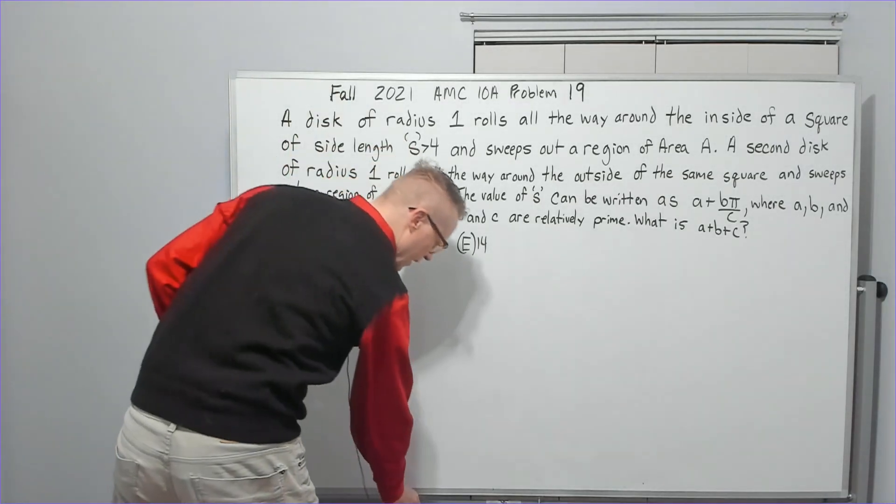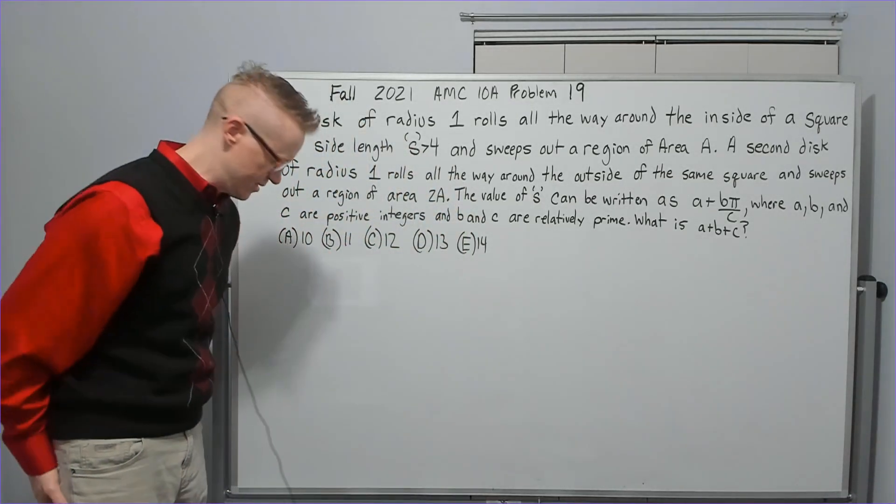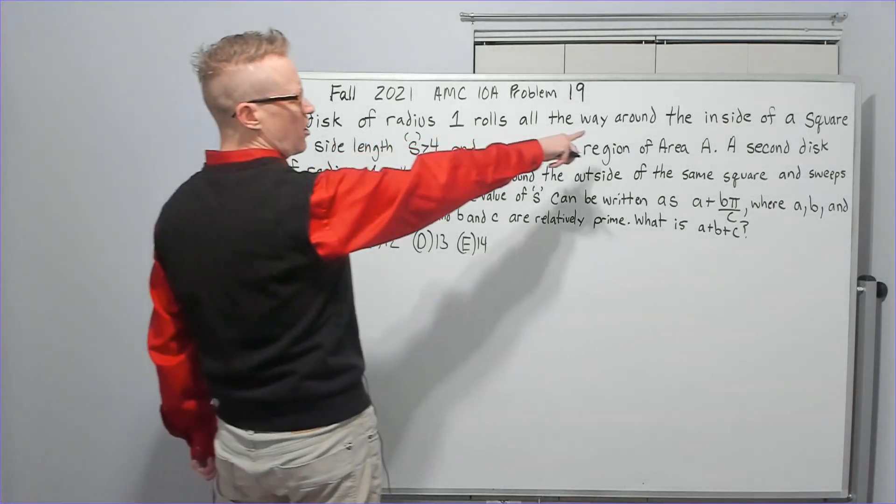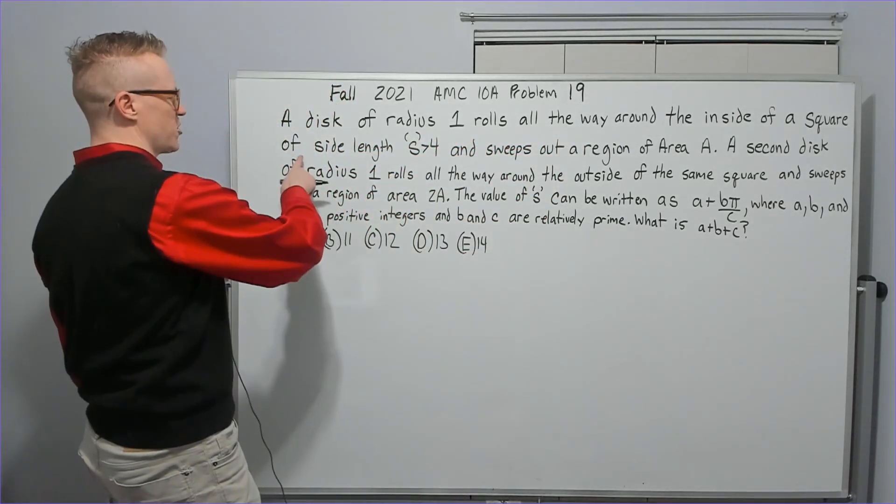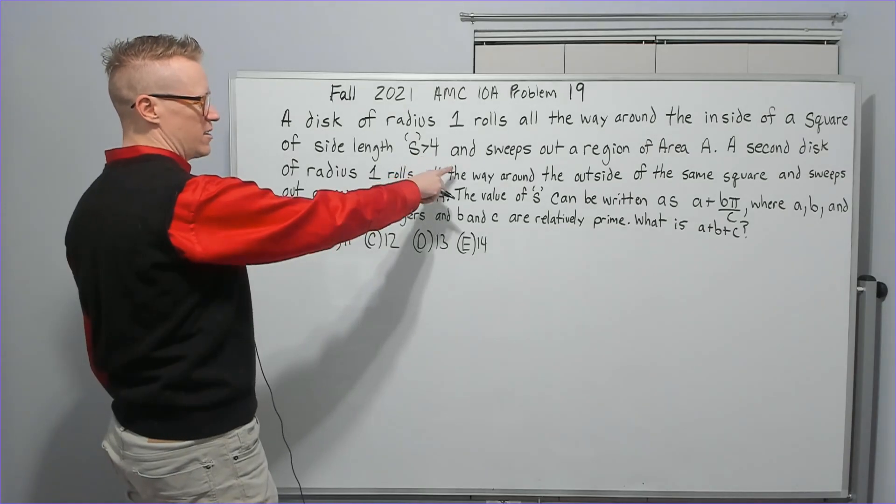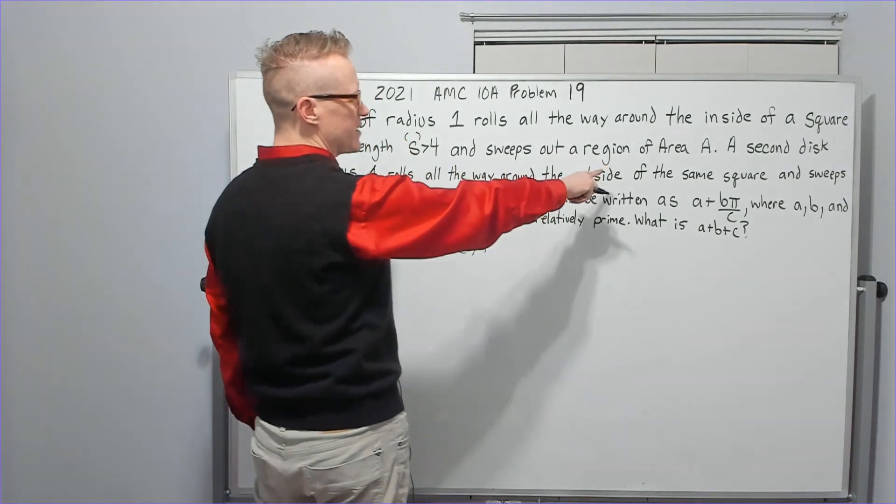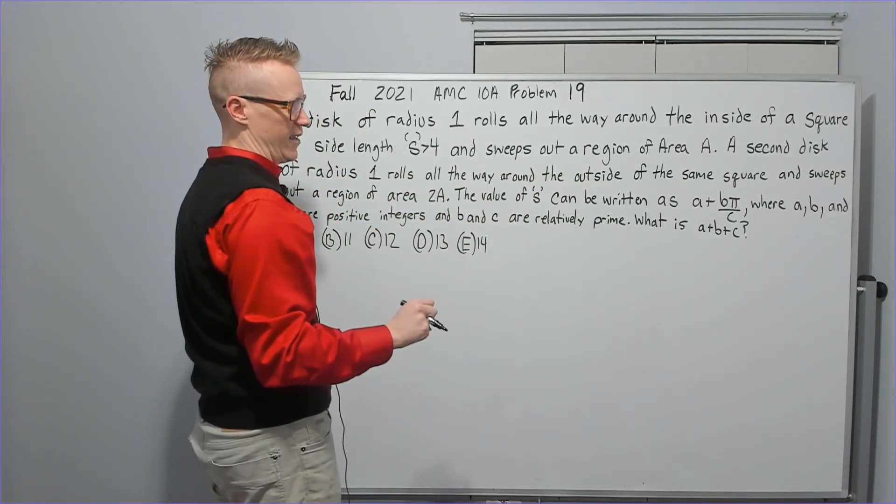A disc of radius one rolls all the way around the inside of a square of side length s greater than four. I put this because it doesn't look like italics on my board, and sweeps out a region of area A.